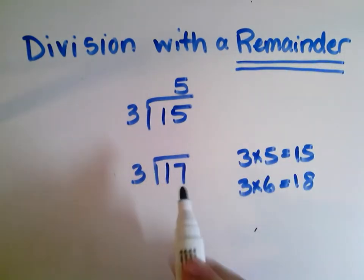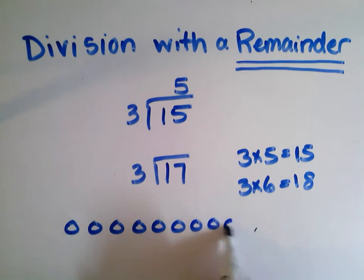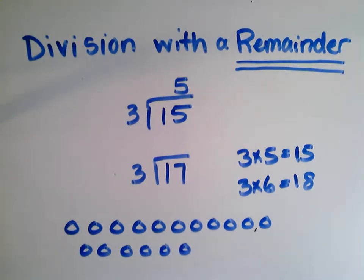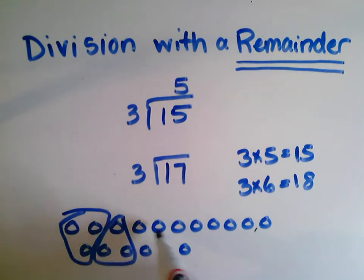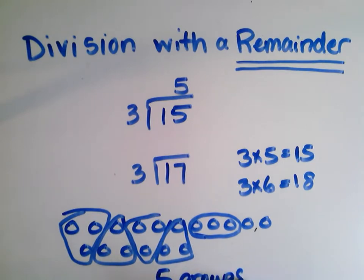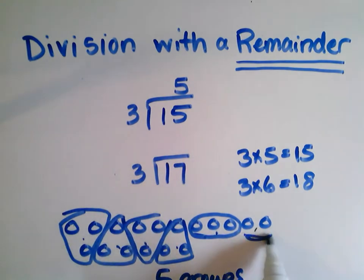Let's say I had 17 of something. Here I have 17 circles, and I'm going to divide them into groups of 3. Here's a group of 3, here's a group of 3, here's a group of 3, another group of 3, and here is a group of 3. So I still got 5 groups — I could get 5 groups of 3, just like that's 15: 3, 6, 9, 12, 15.